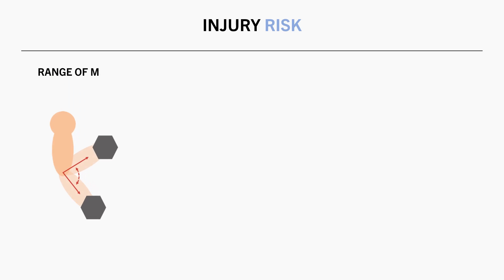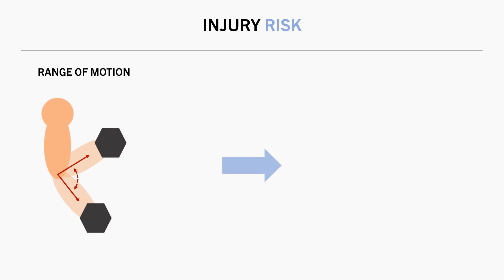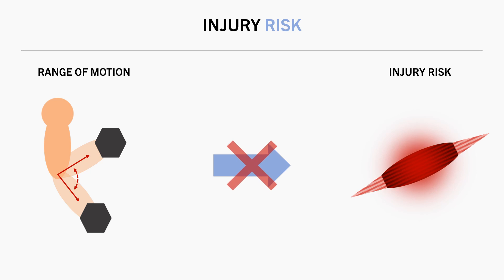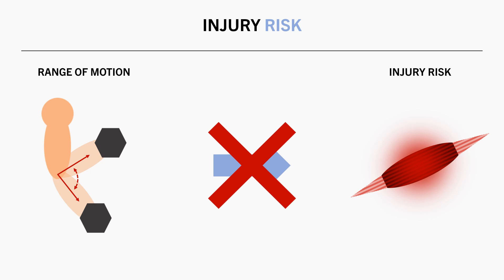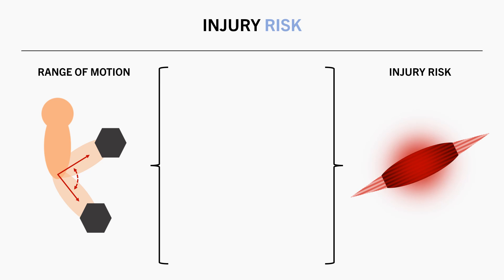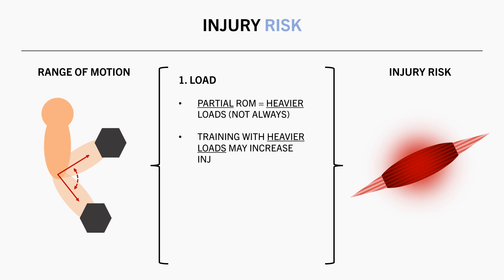And the last factor that the range of motion we train with might have an influence on is our injury risk. It is sometimes assumed that training with a reduced range of motion increases our likelihood of injury or musculoskeletal pain. I am unaware of any direct evidence investigating this effect, and it is a difficult topic to study. However, there are two indirect ways in which the range of motion we train with might influence injury risk. The first is via its influence on the weight we are able to lift. In many cases, lifting with a partial range of motion allows us to use a heavier load, and while there isn't a direct correlation between the load used and injury risk, training with heavier loads might be one factor which increases the likelihood of developing joint pain over time.